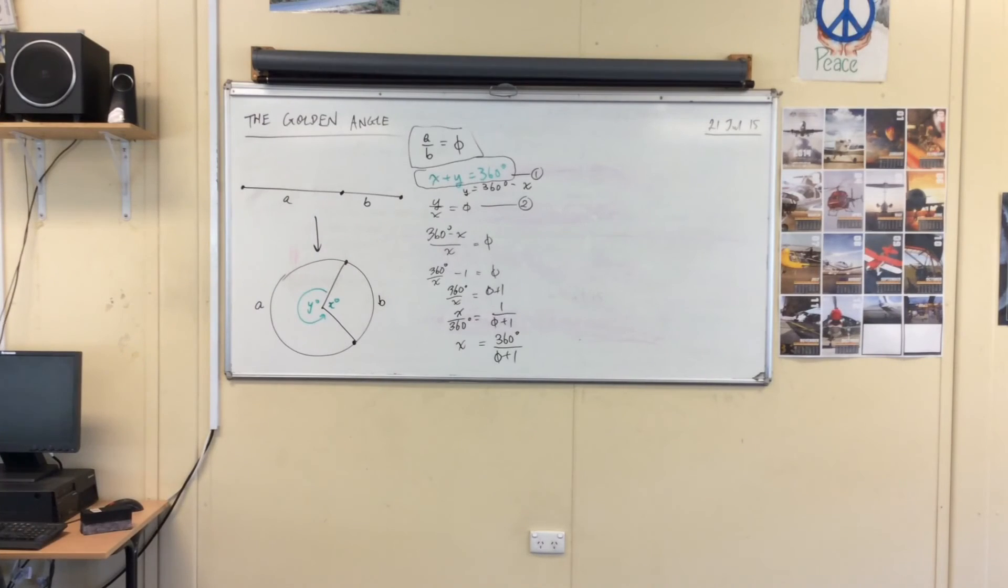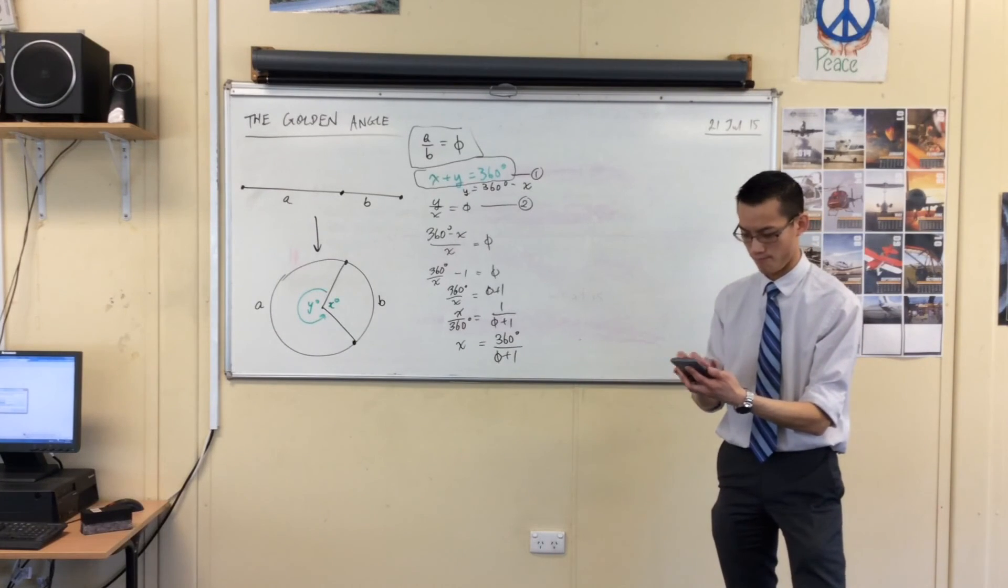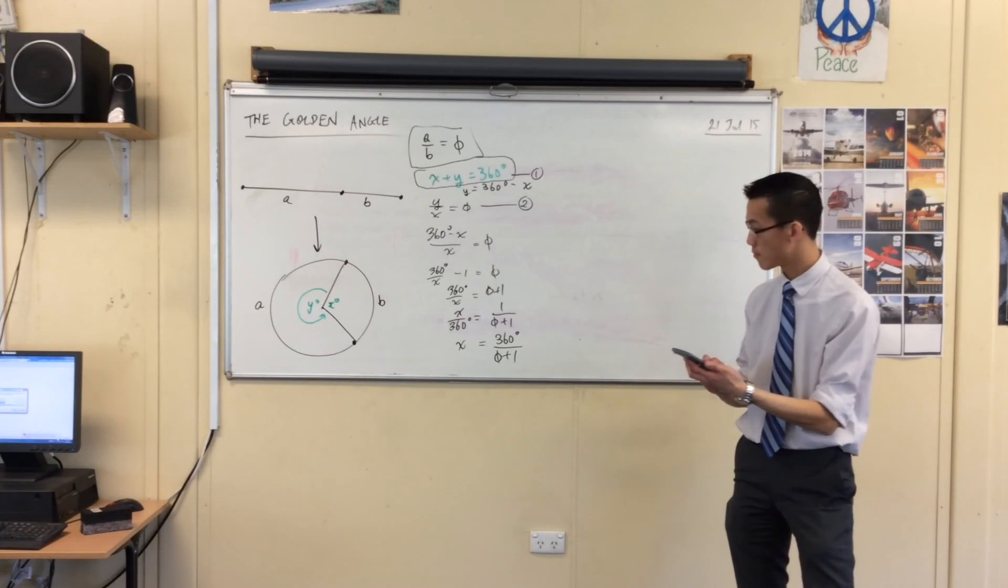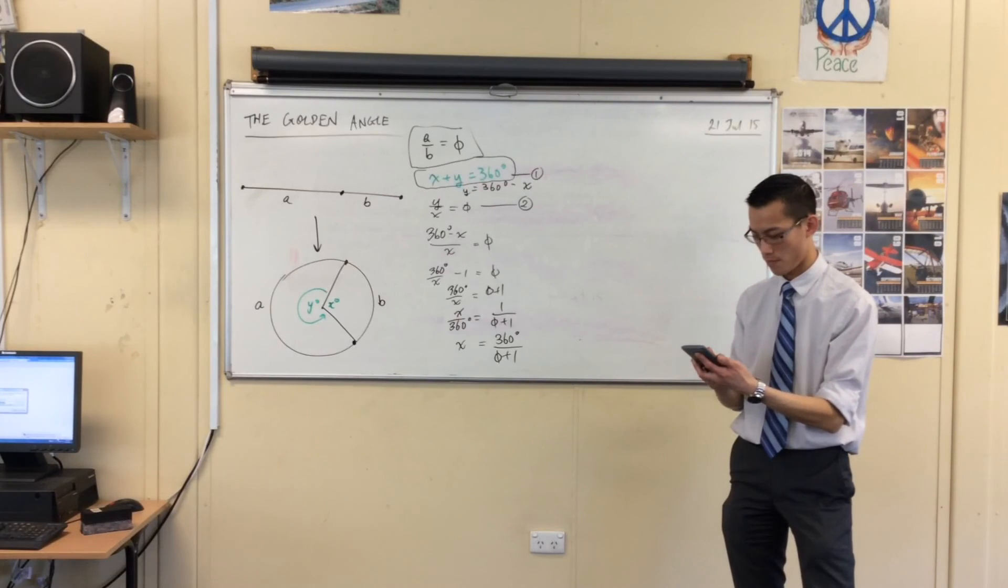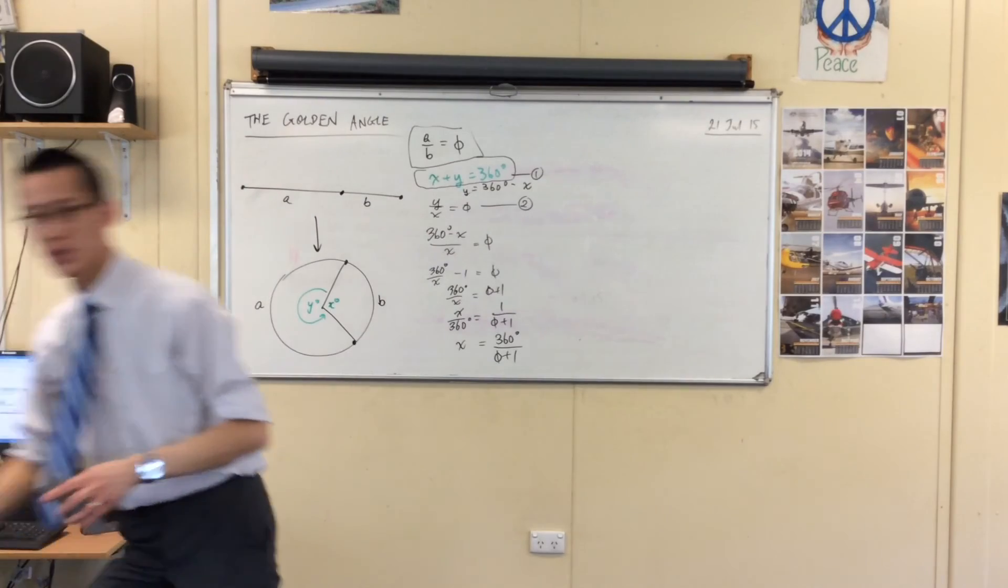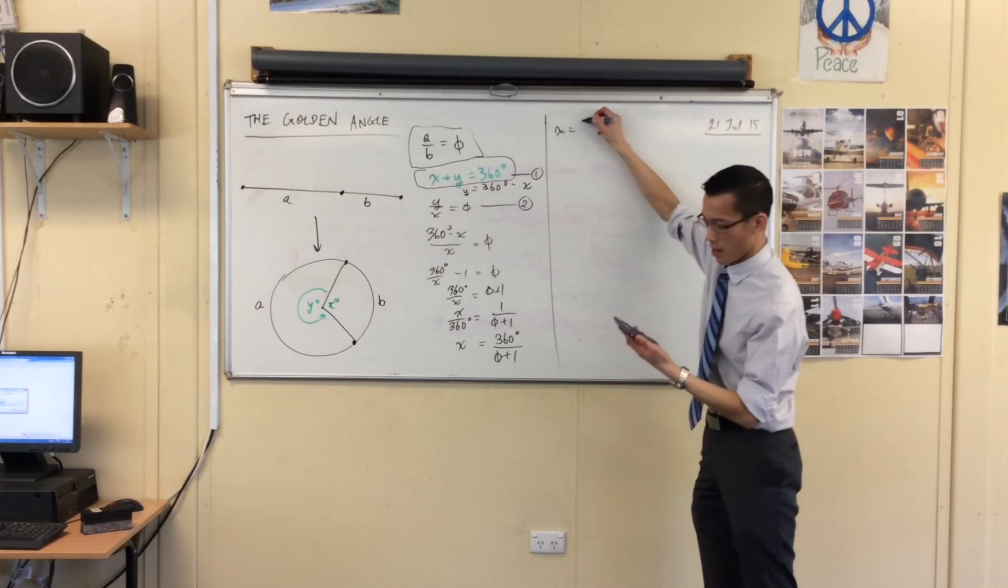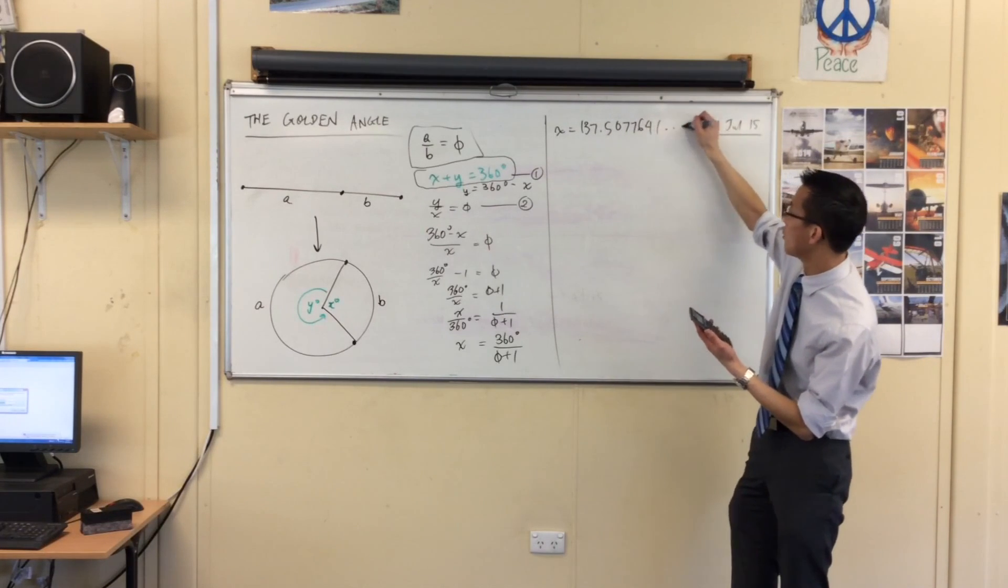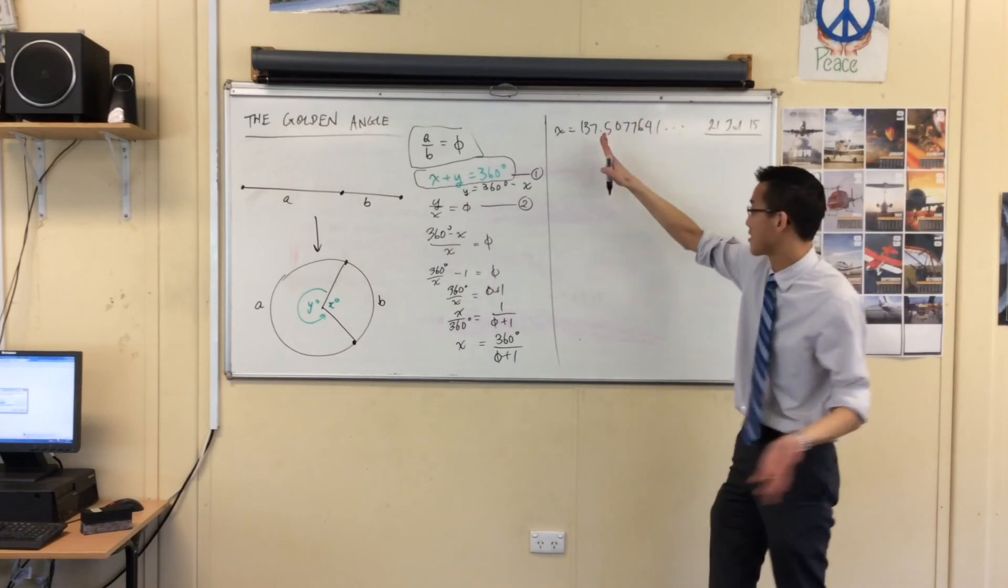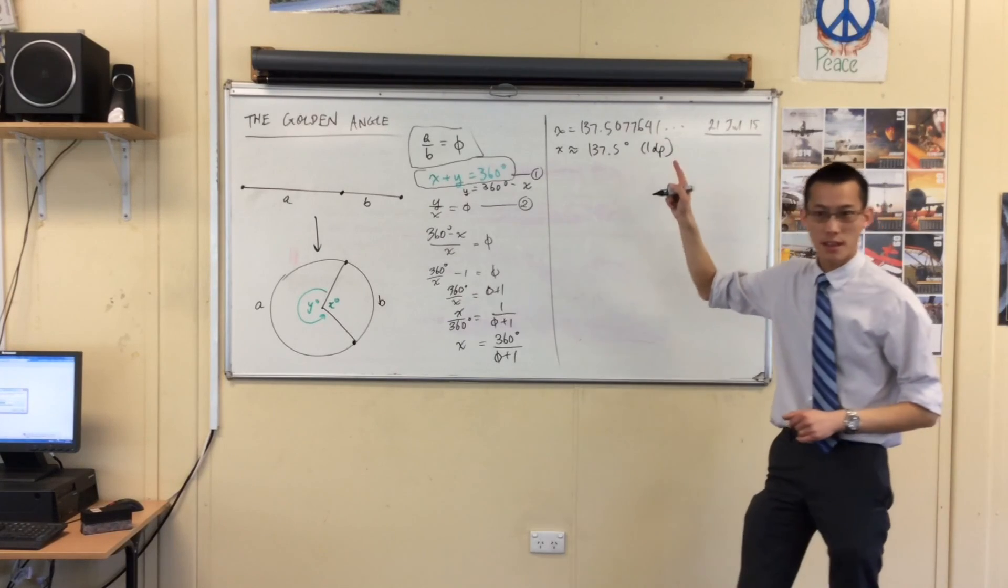Now, you know what phi is. So, let's see here. What I'm going to do is, first I'm going to give you a whole bunch of decimal places, and then I'm going to round them off a little bit. What I'm getting, as far as my calculator can tell me, is 137.5077641... You can kind of see why I've chosen to go to the nearest one decimal place. That zero there is pretty close to just being zero for the whole thing. So, I'm going to call it 137.5 degrees approximately. This is the golden angle.